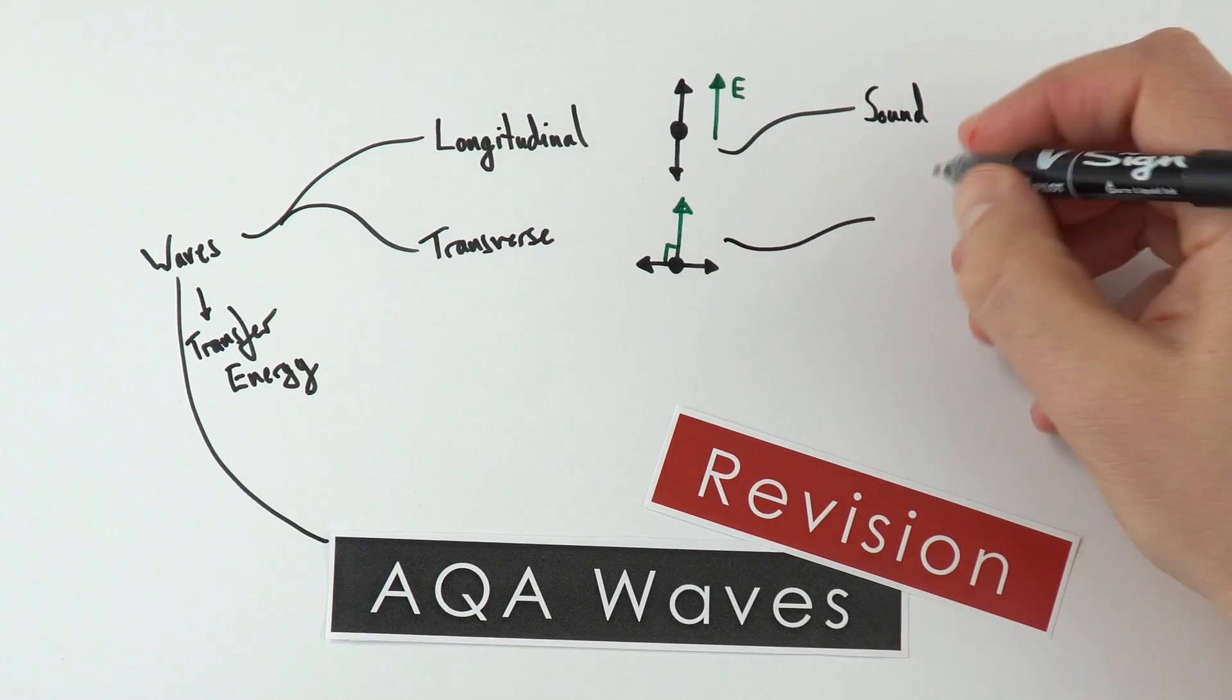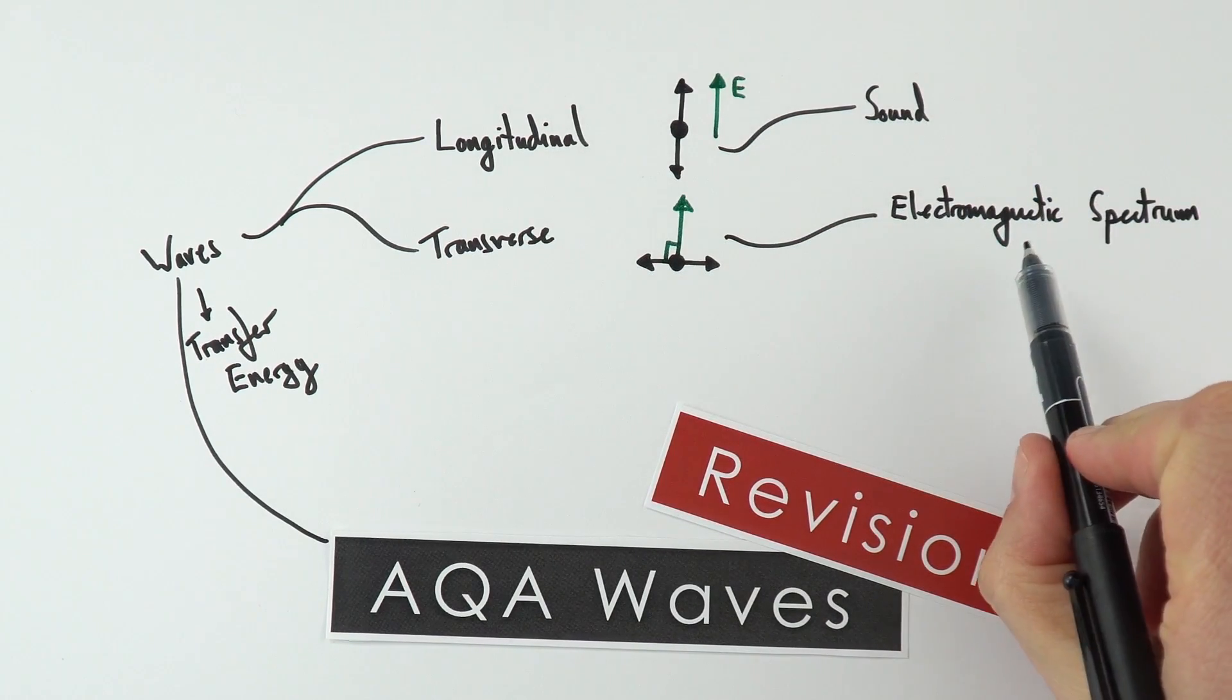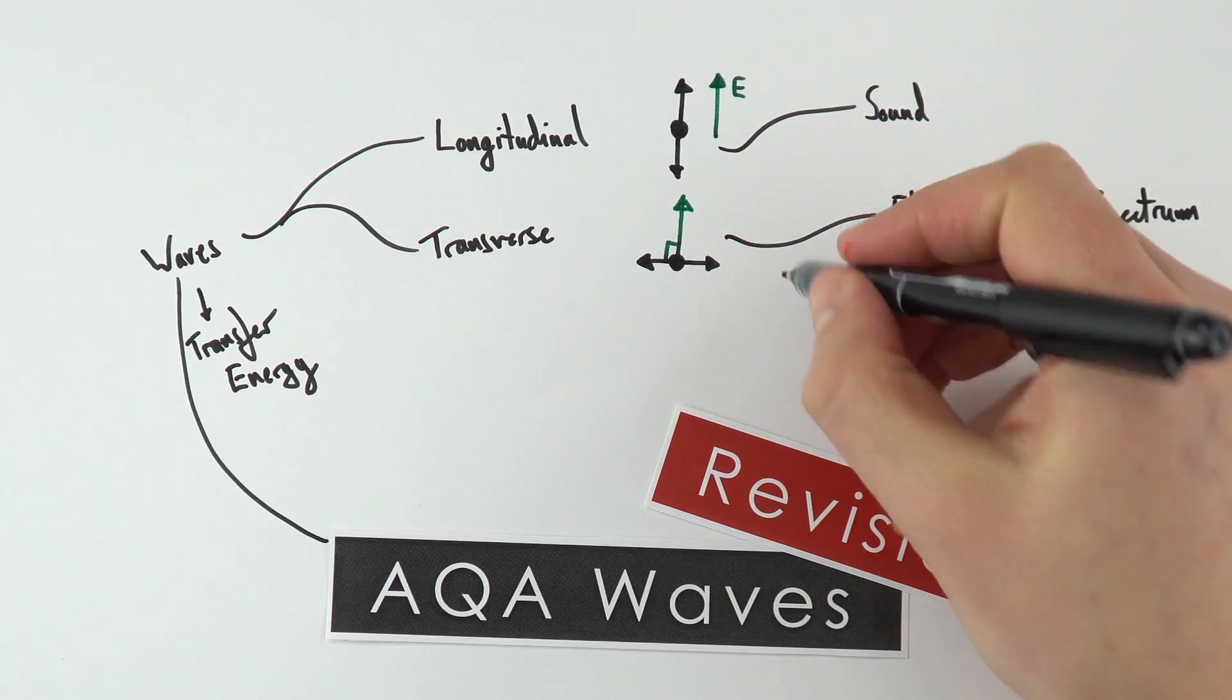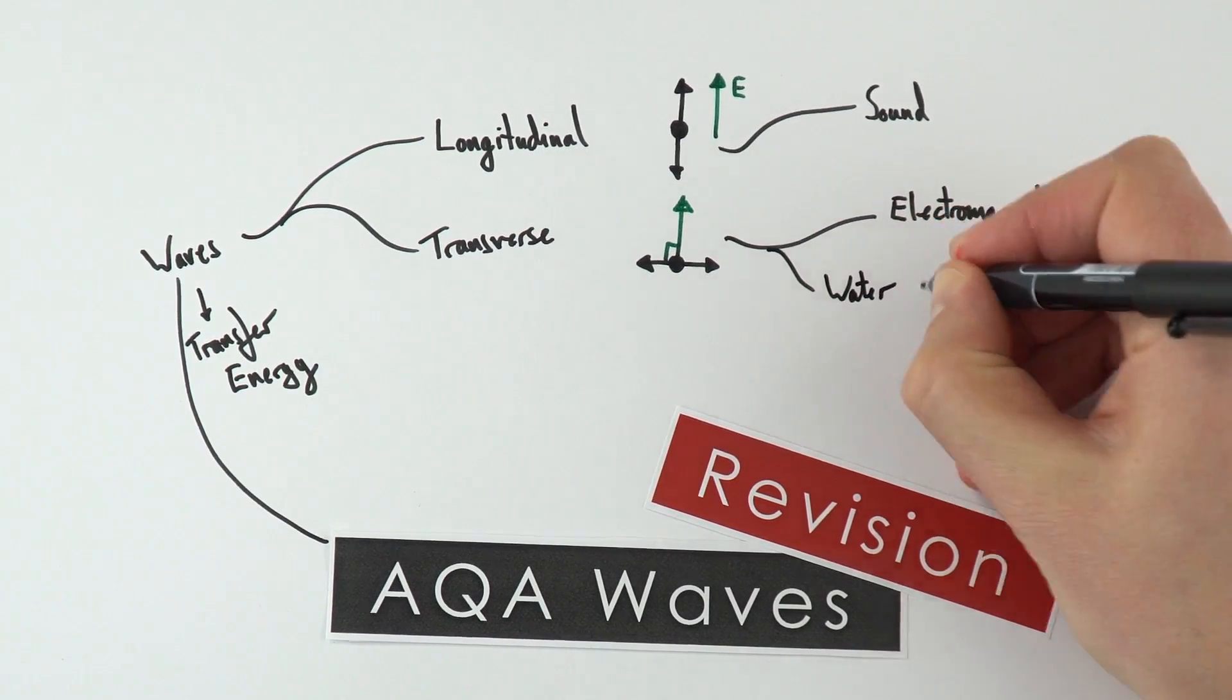In a transverse wave, the particles are going side to side and the energy is being transferred at 90 degrees. We have the whole electromagnetic spectrum and also water ripples on the surface of water.